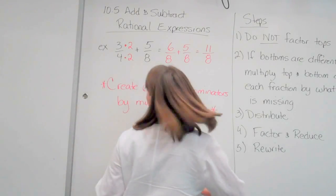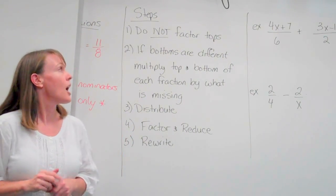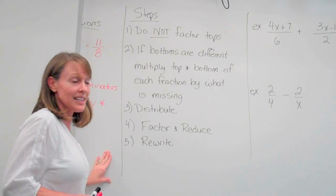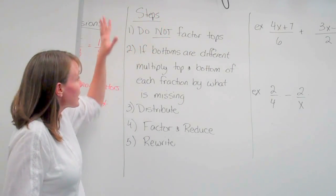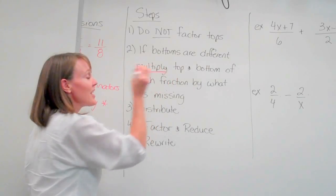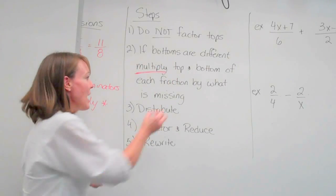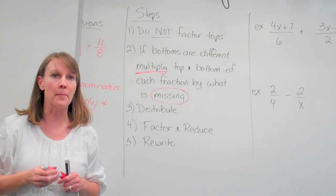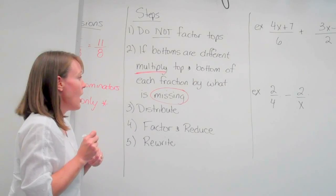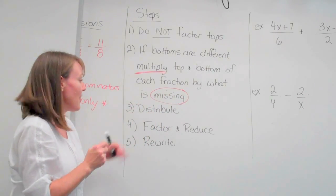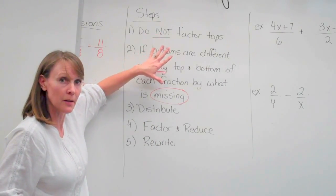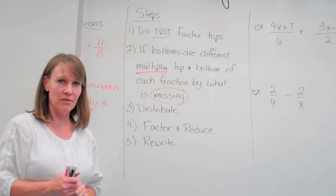All right, now here's the steps coming up. I'm going to go through them, then we'll pause so you have a chance to write them all down. We're not going to factor the tops. We're going to look at the bottoms first, and they're going to be different. So we're going to multiply the top and the bottom of each fraction by what is missing. Then we're going to distribute the tops and the bottoms together. Then we can factor and reduce and rewrite.